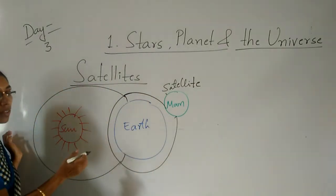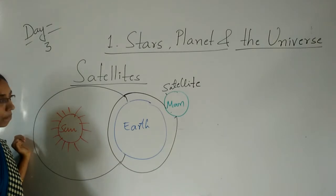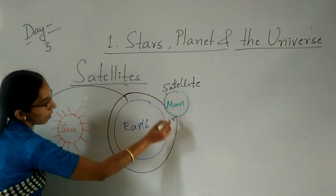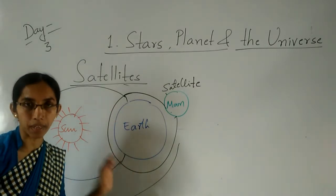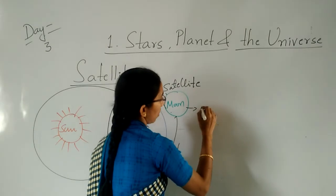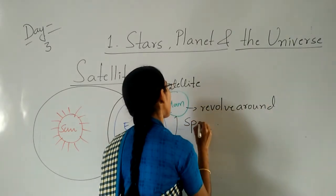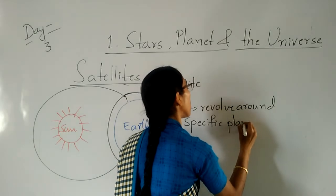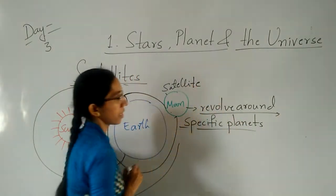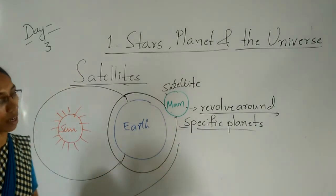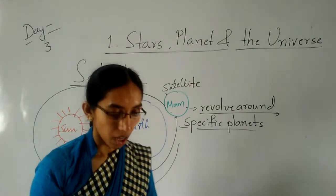The earth has its own natural satellite, that is called the moon. All the planets rotate around the sun. Only the satellites revolve around specific planets. The moon is the natural satellite of the earth.